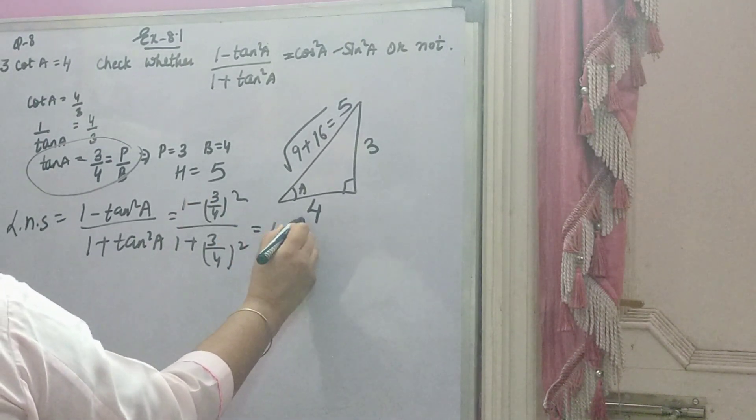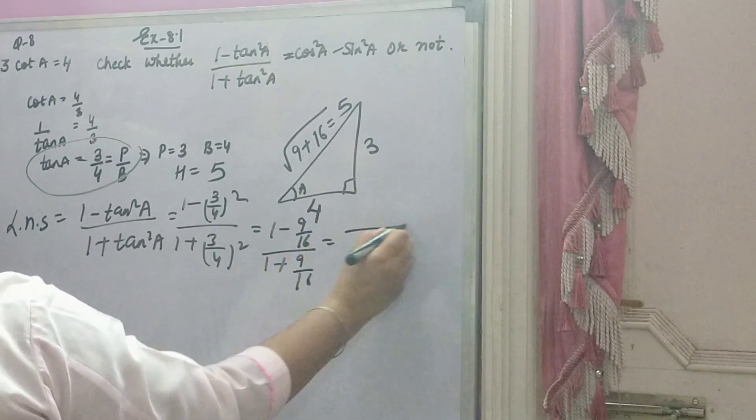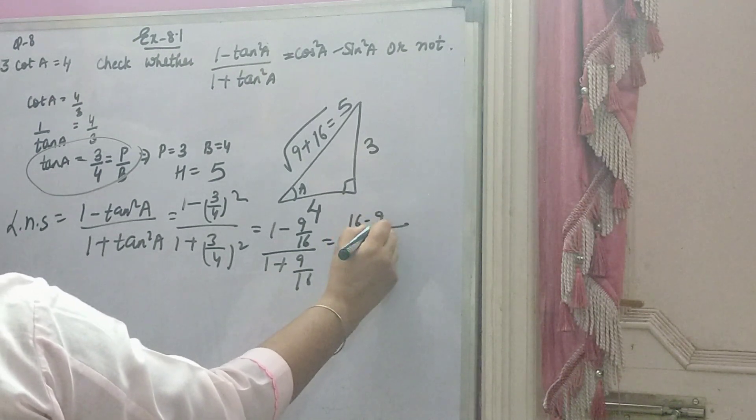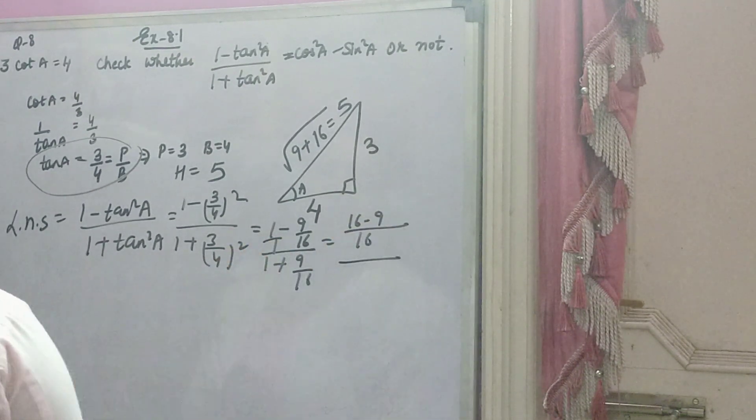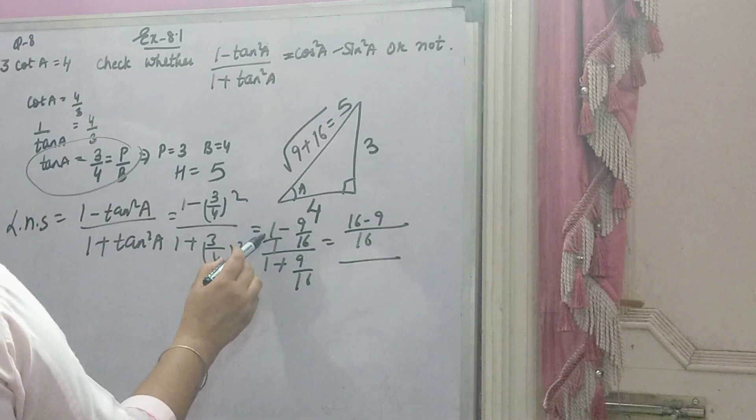Dhyan se. 1 minus 3 ka square 9, 4 ka square 16. 1 plus 9 over 16. 16 alcium reno upar hajage, 16 minus 9. 16 or 1 ka alcium 16. 16 divided by 1, 16.